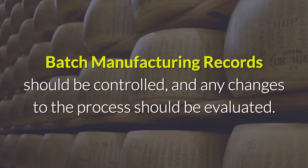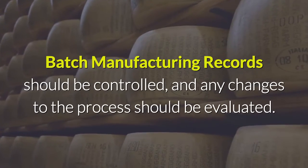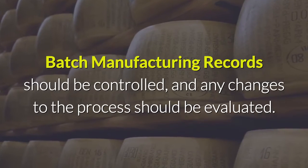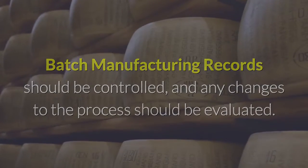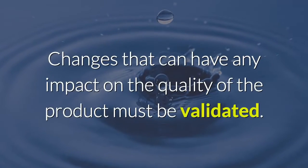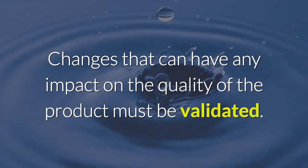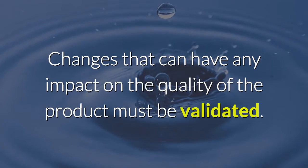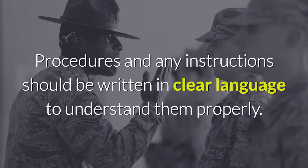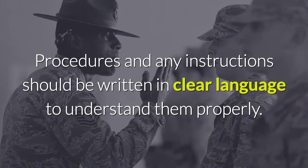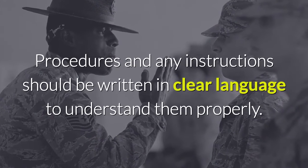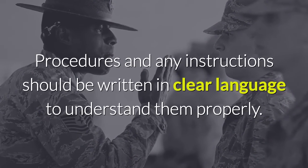Batch manufacturing records should be controlled, and any changes to the process should be evaluated. Changes that can have any impact on the quality of the product must be validated. Procedures and any instructions should be written in clear language to be properly understood.